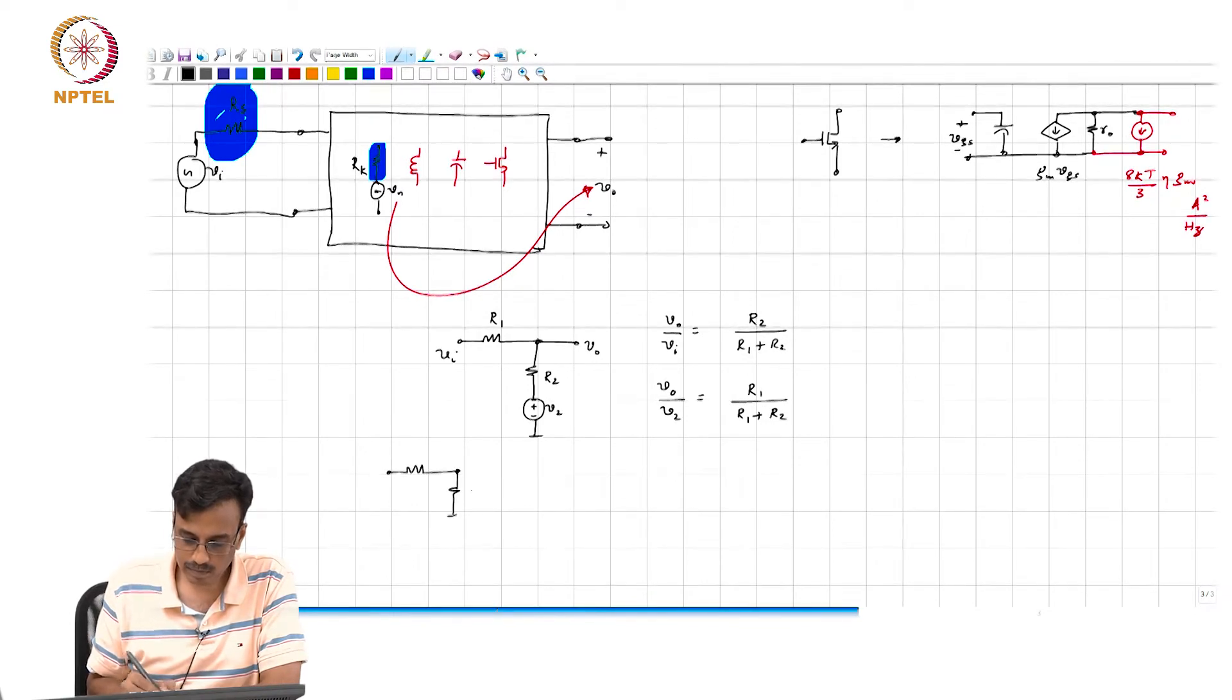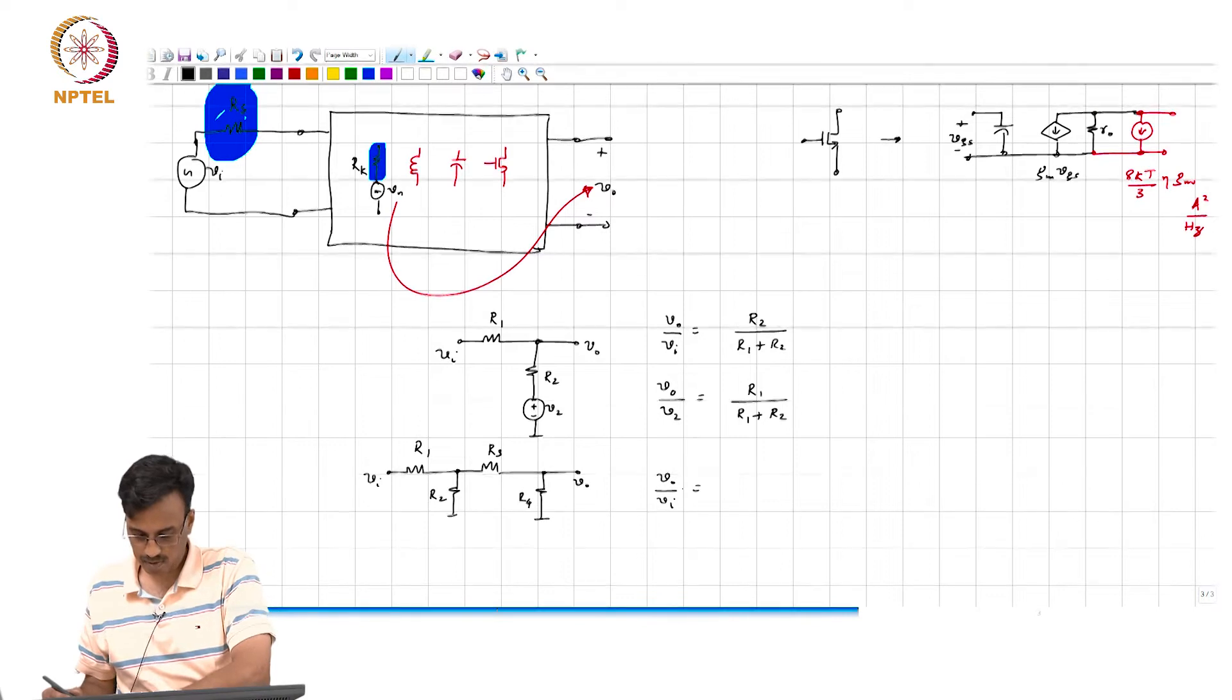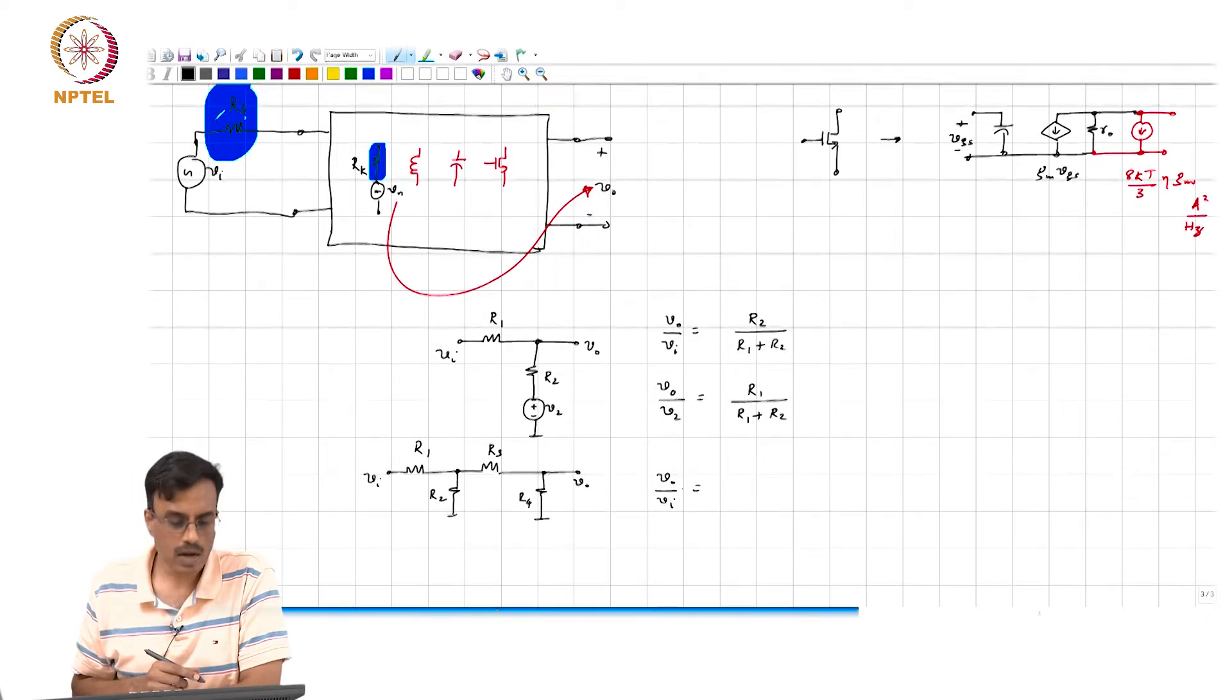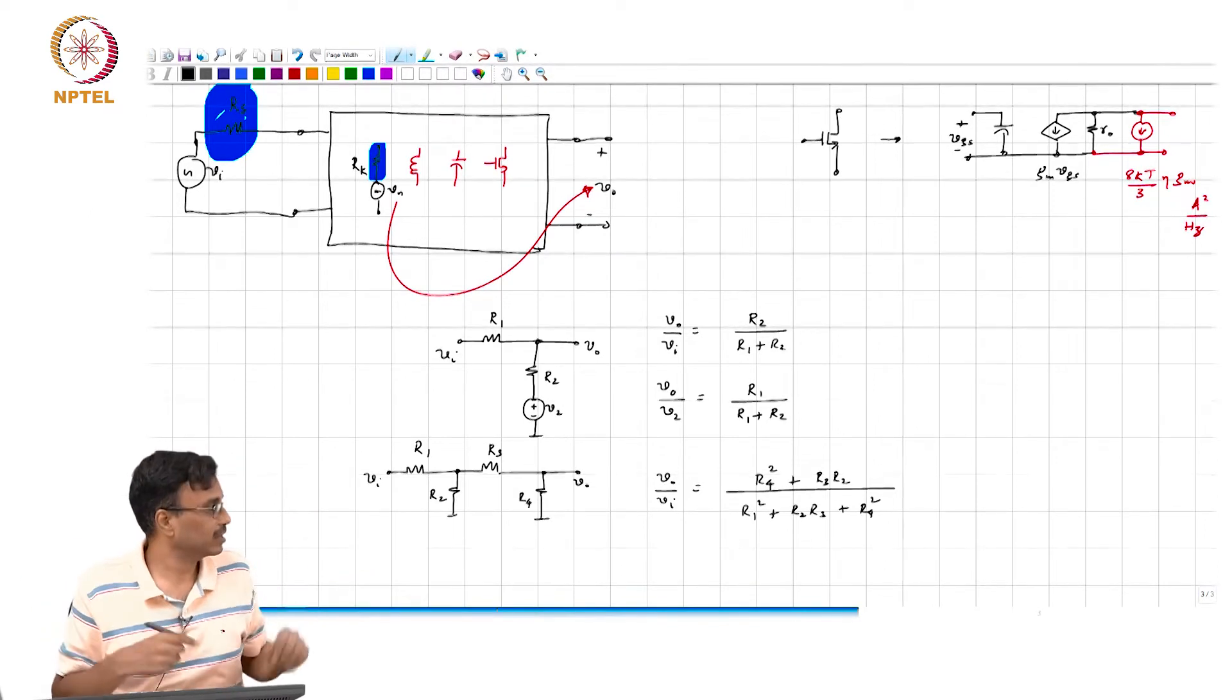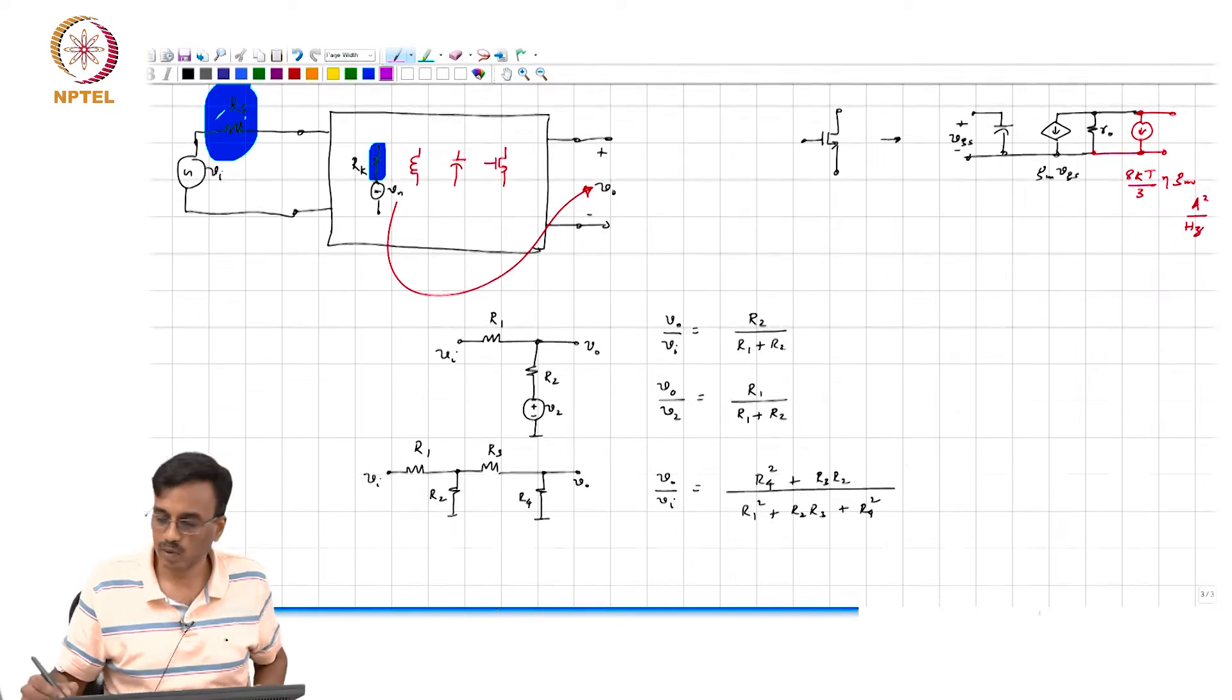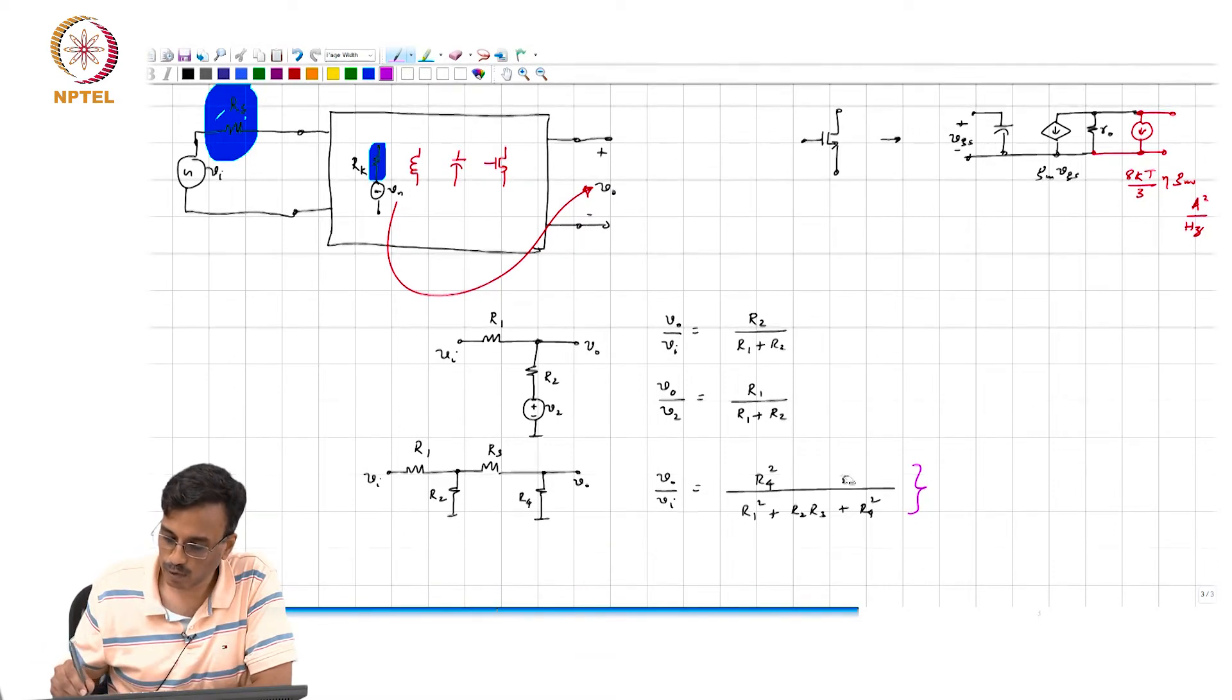Now let's say somebody gave you a more complicated network with R1, R2, R3, R4 and you went and calculated and it turned out you got some answer of the form R4 square plus R3 R2 divided by R1 square plus R2 R3 plus R4 square. Can you comment on the correctness or the lack of it of this result - do you think it is correct or wrong?